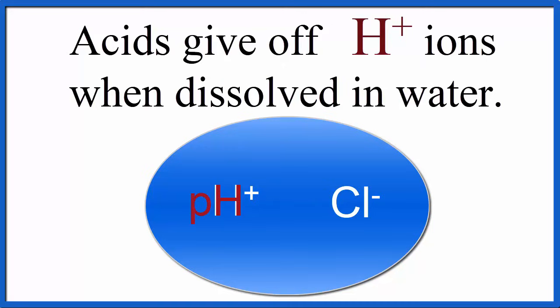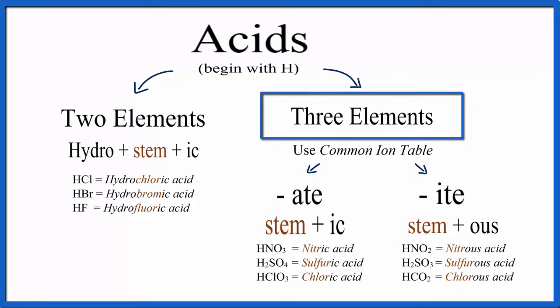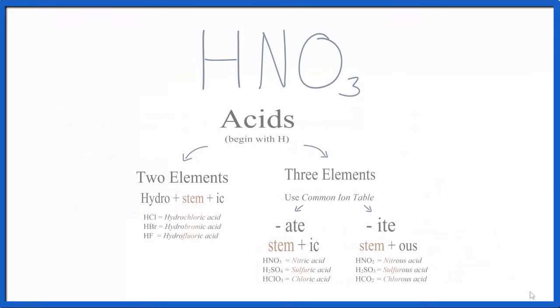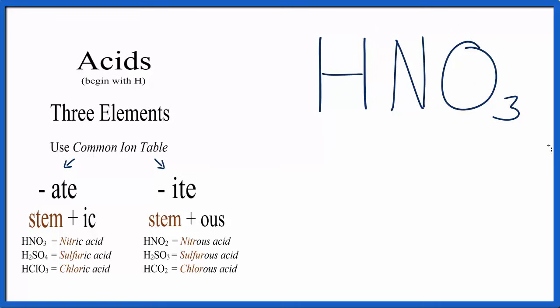So let's move on to what we call oxyacids, acids with three different elements. We'll start with HNO3. We have H, N, and O. That means we're going to be using this part of the flowchart. Note that we have three different elements, and we also have oxygen. These are called oxyacids, and we name them using these rules. For these oxyacids, the periodic table's not really going to help us. We need to use what's called a common ion table. This is a table that lists polyatomic ions. These are ions like NO3 or SO4. They have more than one element involved.